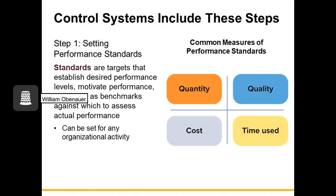The first step in the bureaucratic control process is setting performance standards — targets for desired performance that motivate people and set benchmarks. These can deal with quantity, quality, time use, or cost, and can be set for any organizational activity. For example, in a call center we had standards for calls per day and average call time. In the building trades, we had daily safety checklists setting standards for machine condition and warehouse safety preparation, as well as standards built around sales, profit, and other business metrics.